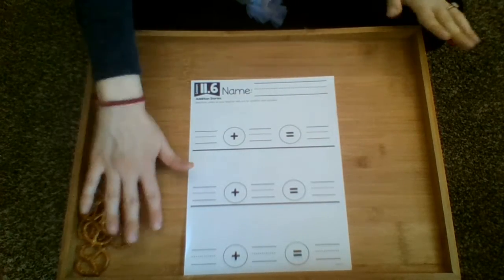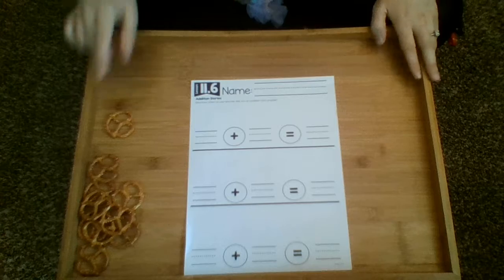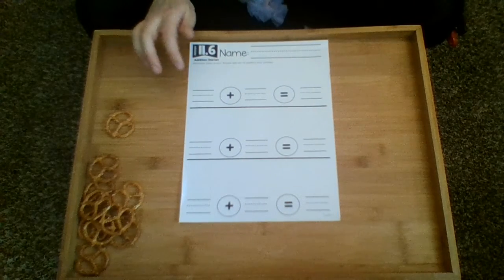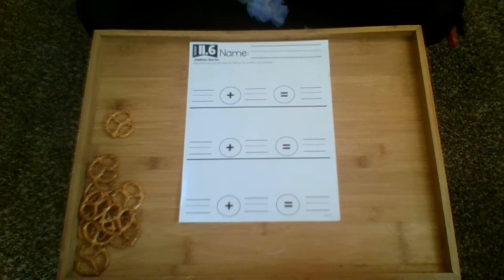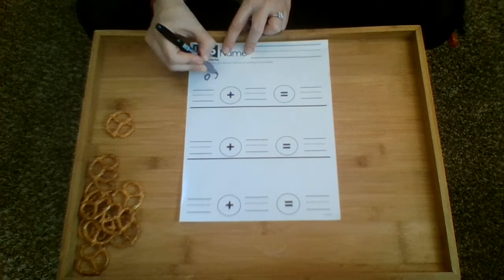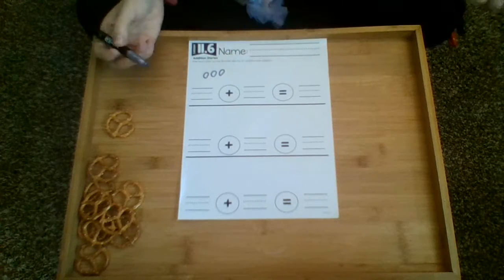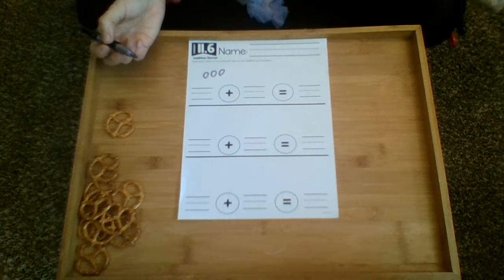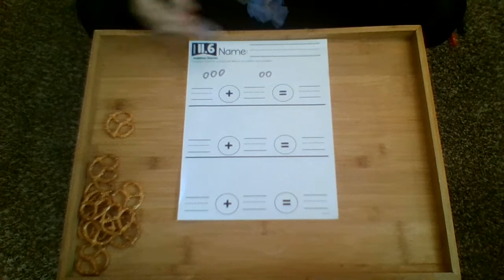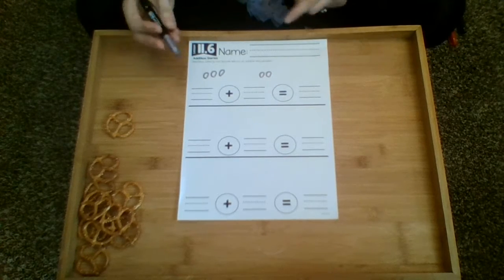You can use pretzels. That's my manipulative of the day. I will not be eating those later. Don't worry. Some examples you could do is Freddie has three soccer balls and you could make your three soccer balls and then his sister Julie has two soccer balls and I could draw Julie's two soccer balls.